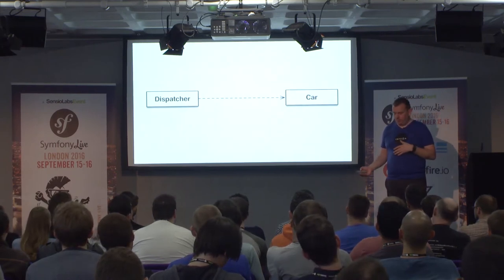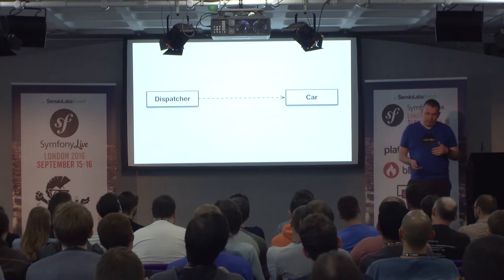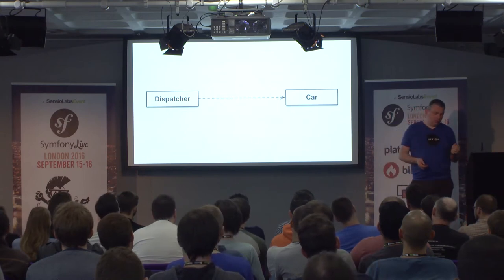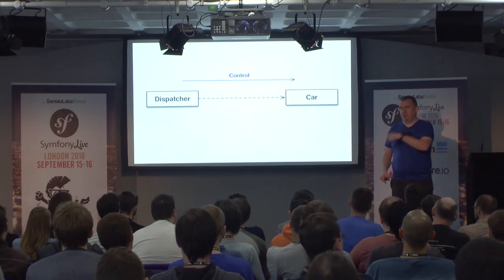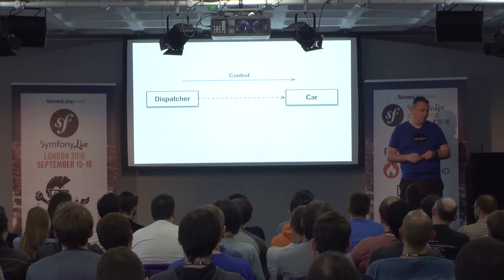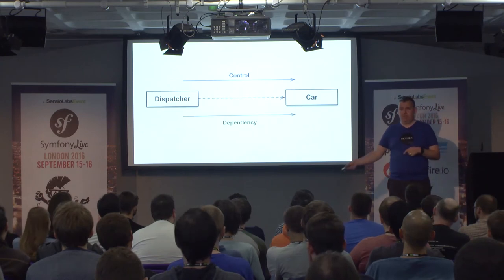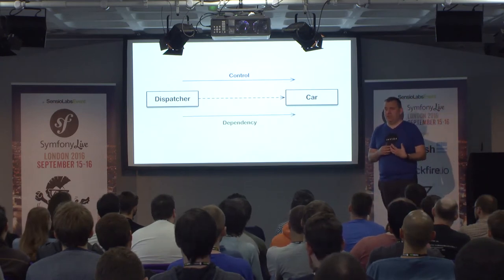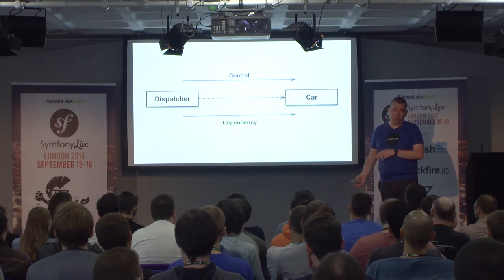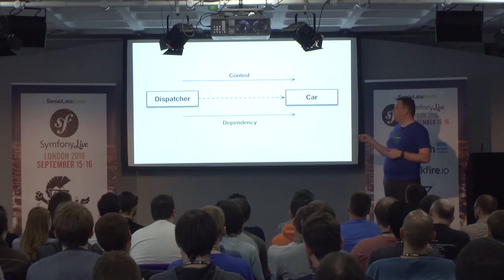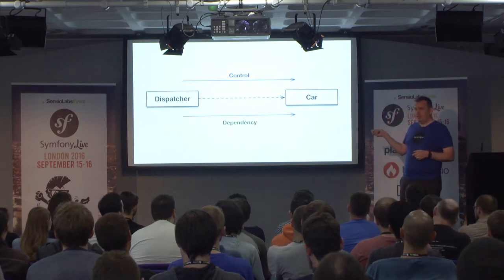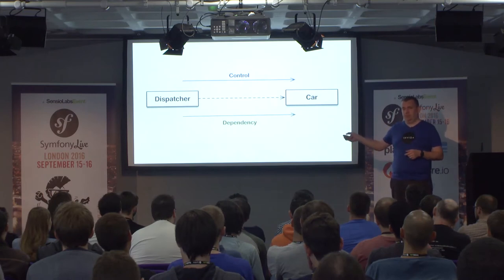It's a very simple diagram — the dispatcher uses the car, and the dispatcher controls the car. The car is going to go somewhere because the dispatcher told it to. The dispatcher depends on the car; the dispatcher object has to know all about cars, has to know what methods to call. If something changes in the car, you're going to have to change your dispatcher. That's what a dependency really means: if something changes here, this has to change as a reaction. Coupling is all about change.